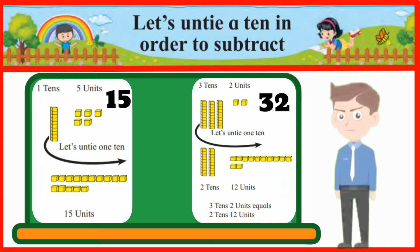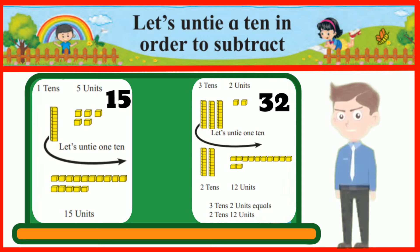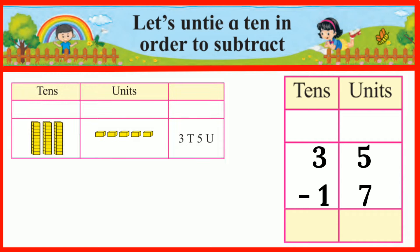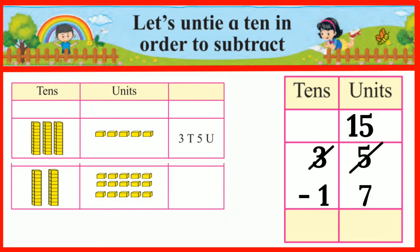Students, now you understand how a 10 can be untied. Now we will solve some subtractions based on this. 35 minus 17: here we cannot reduce 7 units from 5 units, so we will have to untie one 10 from these three 10s. 10 plus 5 is equal to 15 units altogether, and only two 10s will be left.